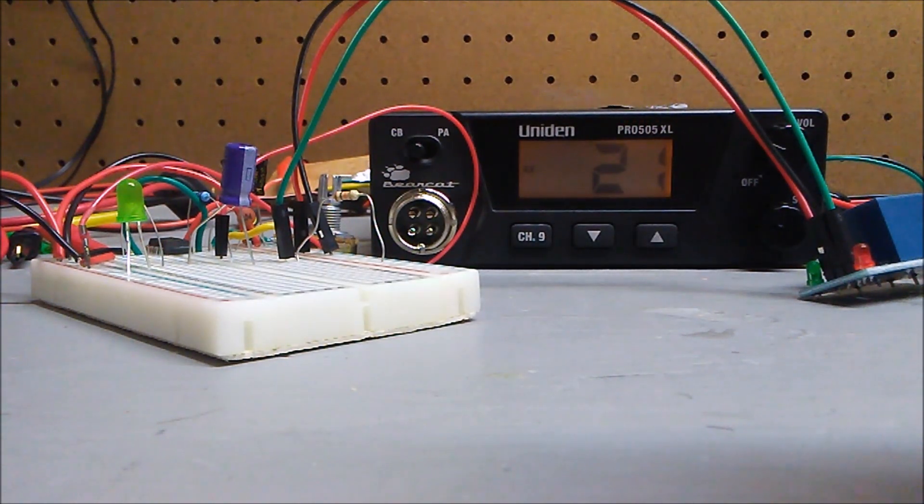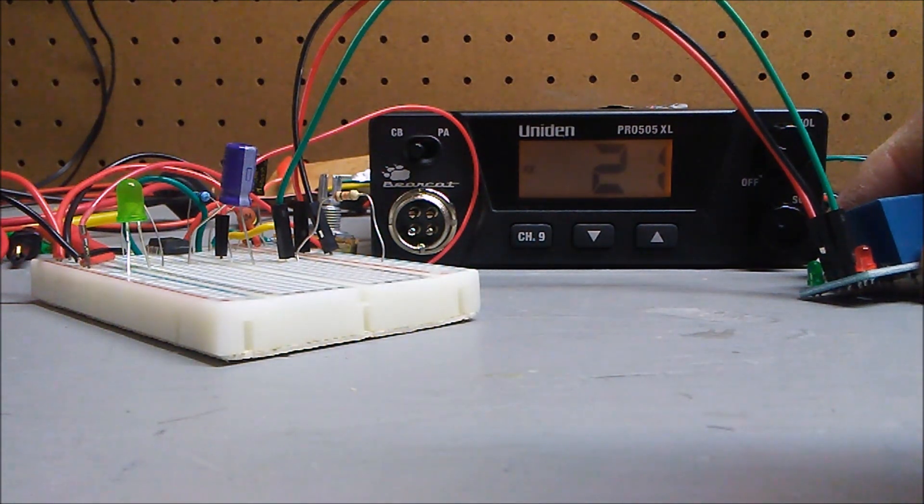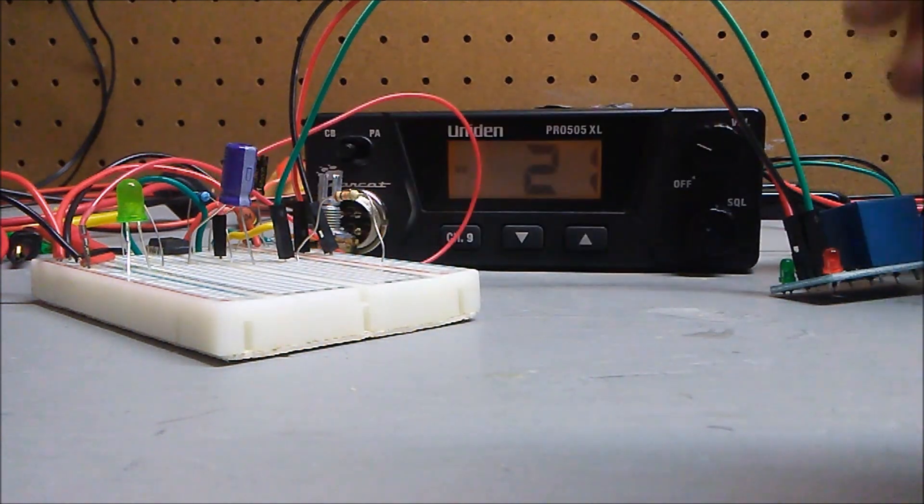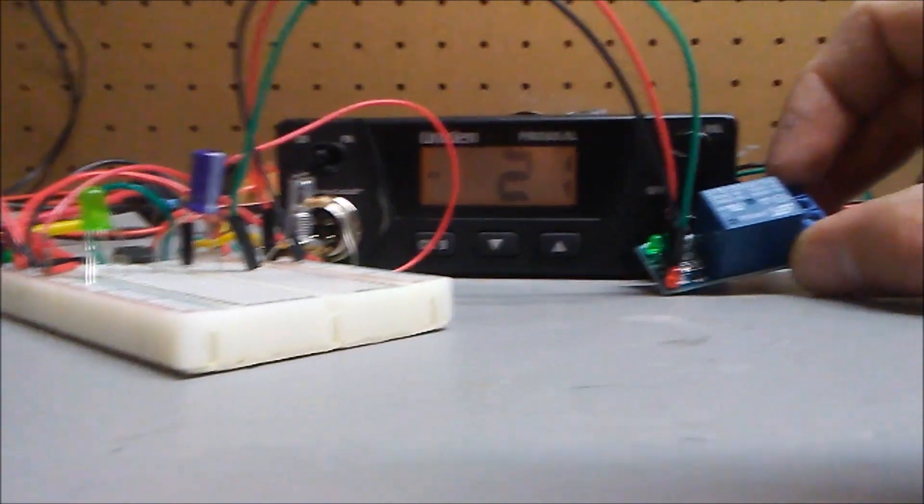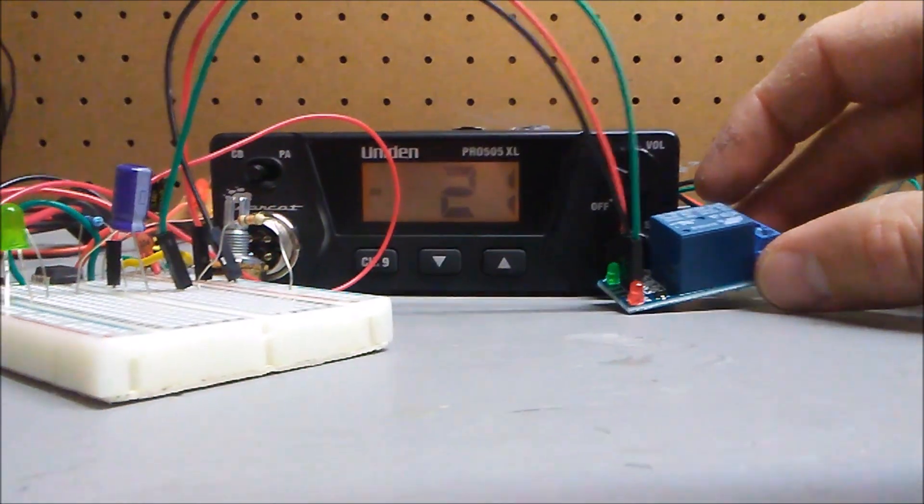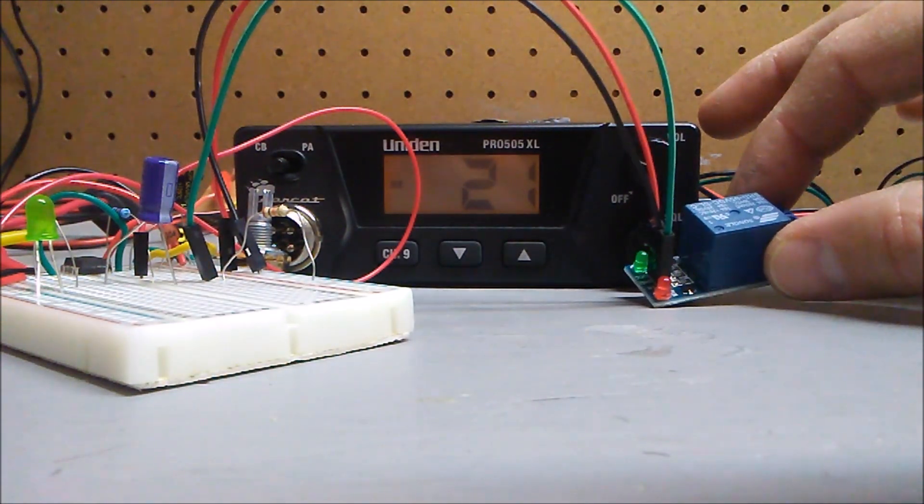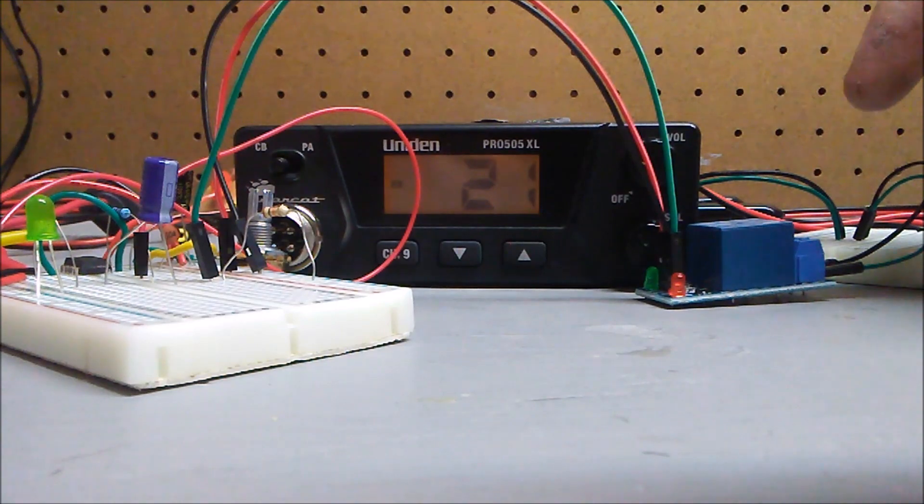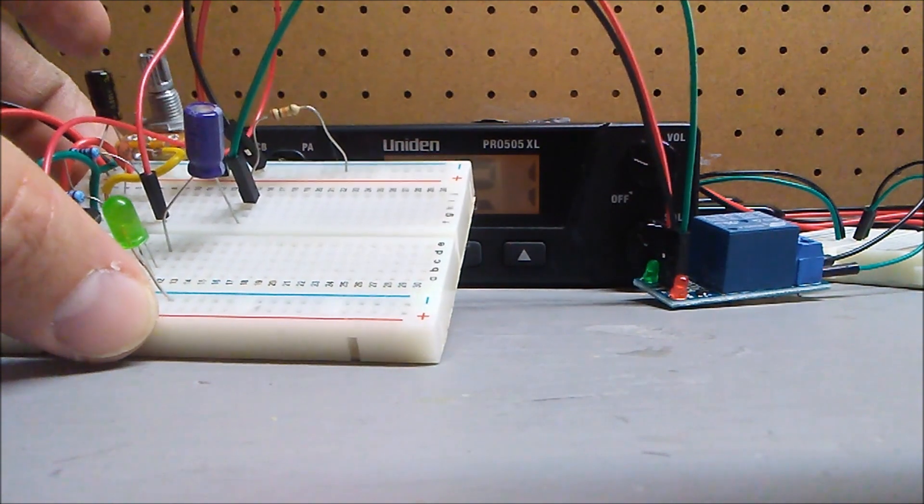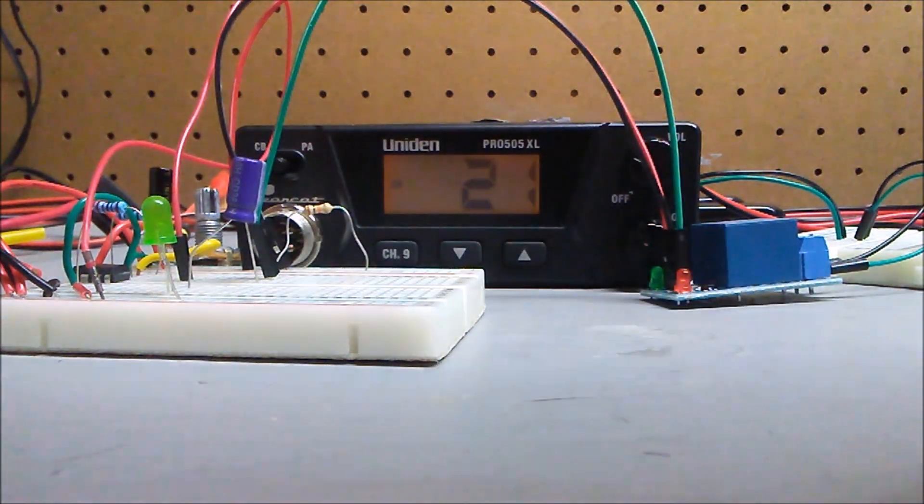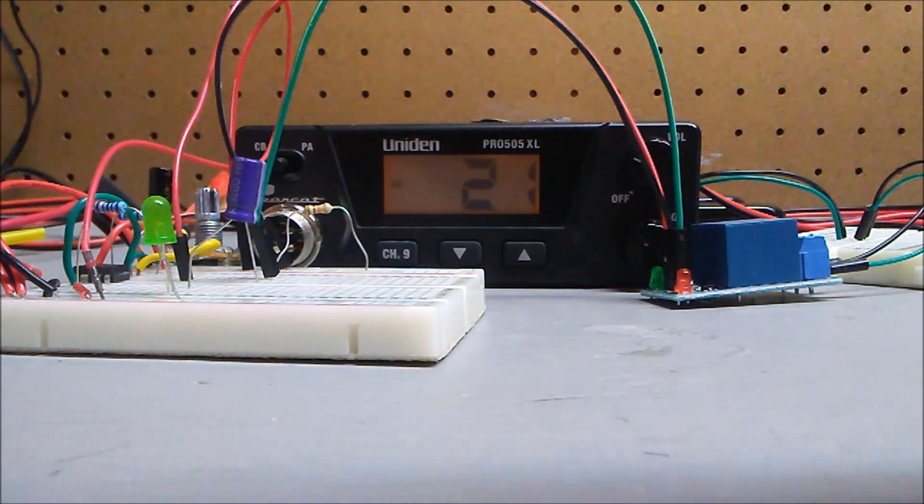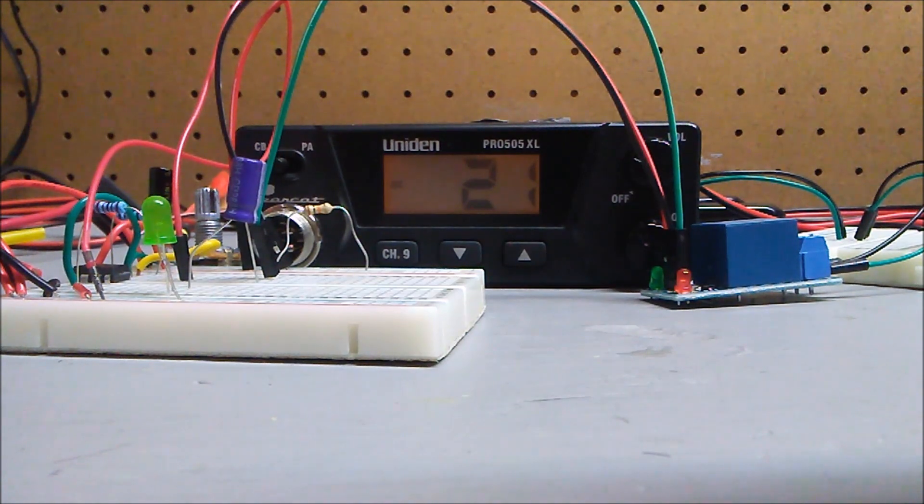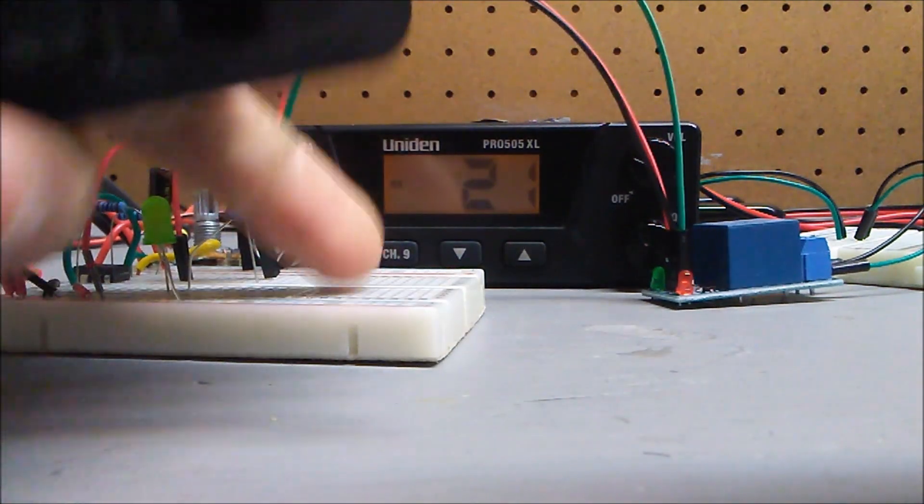So I thought, well, if I hook the signal up to a relay, and this is one of those cheap 5V Arduino relays, and I pull the signal low using this relay by closing the switch, pulling it low, then with the 555 timer circuit, I can actually create a scan feature for this CB radio, which otherwise does not have a scan feature. So I'm pretty proud of it.